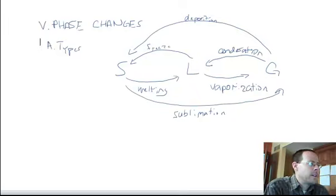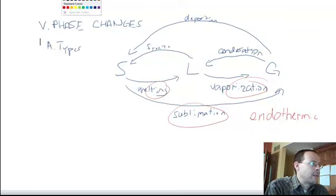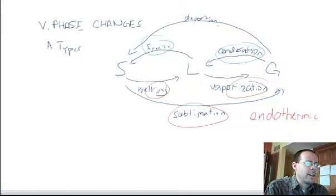A couple things I would like you to know with this is thermodynamically, if we're going from solid to gas, these processes—melting, vaporization, and sublimation—are all endothermic. They all require an input of energy in order to take place. And then the flip side of that is if we're going the opposite direction, if we are freezing, condensing, or depositing things, these are all exothermic processes. These give off heat, which is kind of weird with the freezing.